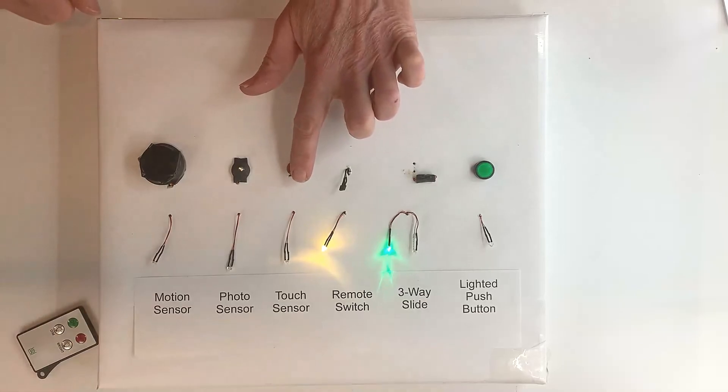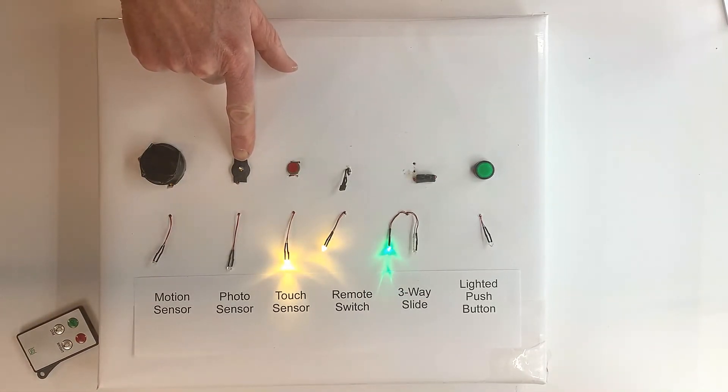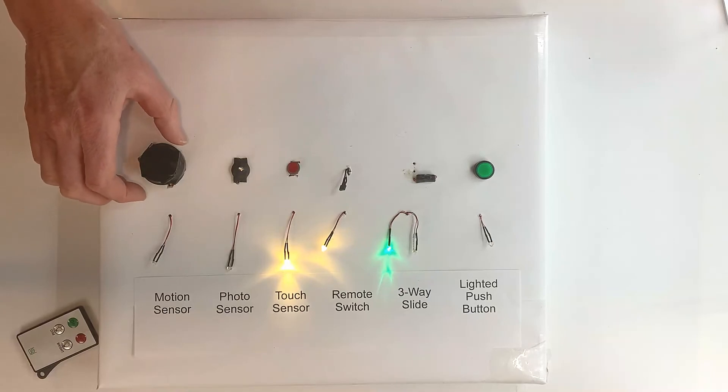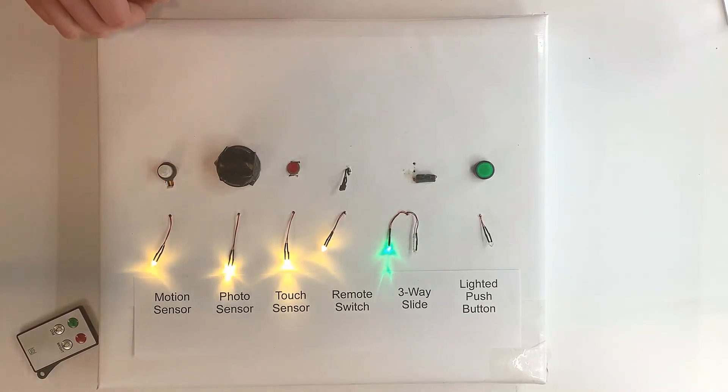Then we have touch sensors. This switch is a photo sensor, so it only comes on in the dark. And this switch is a motion sensor which just senses motion. So it'll stay on for 15 seconds and then go off.